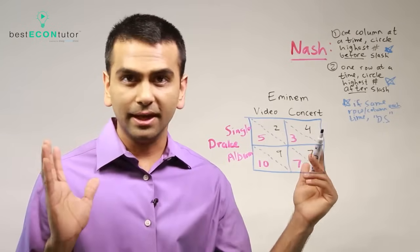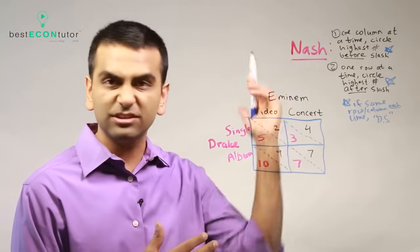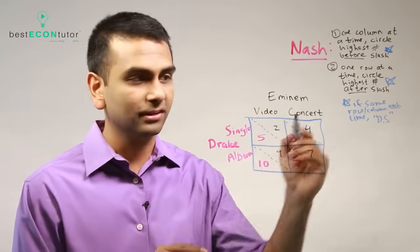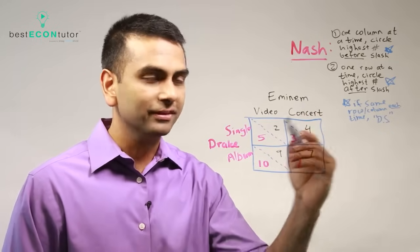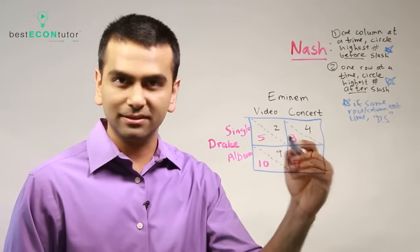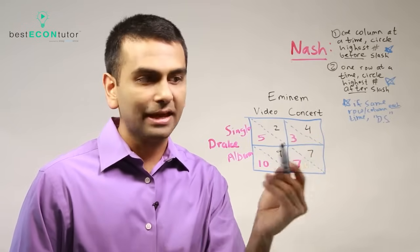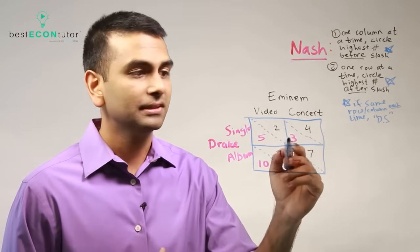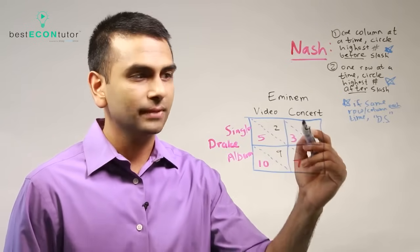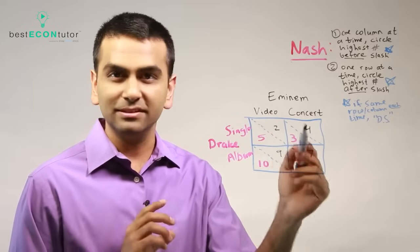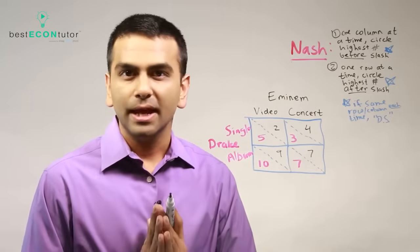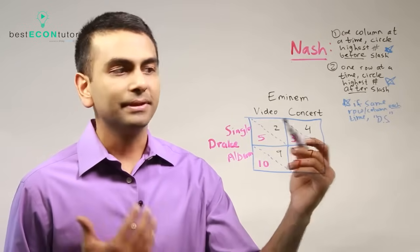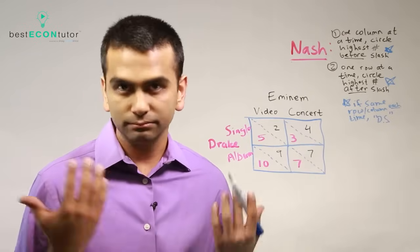Let's say Drake releases a single and Eminem does a concert. Go to that row where it's a single and that column where it's concert, and this is where you end up - this three and four, that cell. The red number before the slash is always the row player's payoff - kind of like how many points they get, the profits. So here Drake gets three and Eminem gets four. Notice that for this game, it's not really going to be a winner and a loser - you're just trying to maximize your own profits.